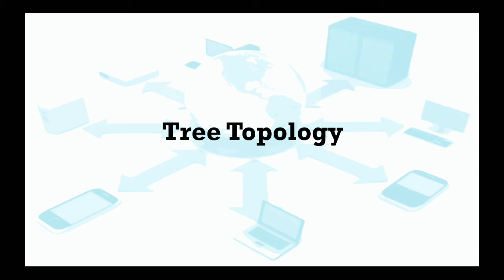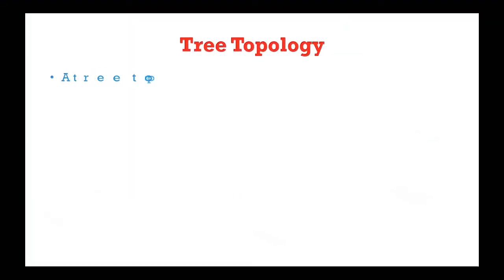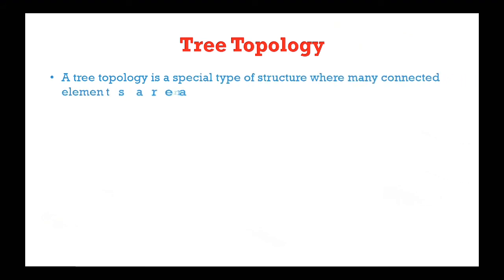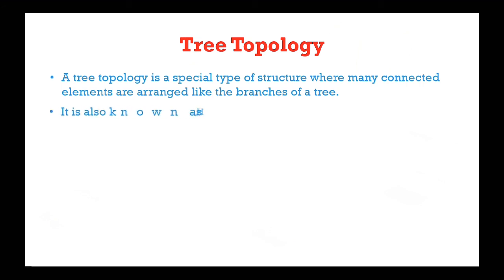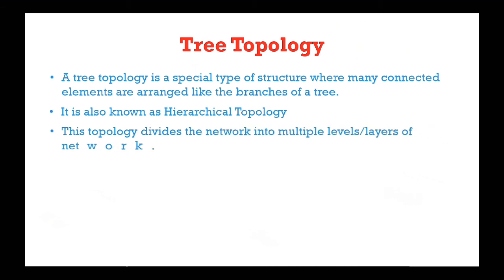Hello friends, welcome to Learning Digitech. Today we will see another type of topology known as tree topology. A tree topology is a special type of structure where many connected elements are arranged like a branch of a tree. It is also known as hierarchical topology.